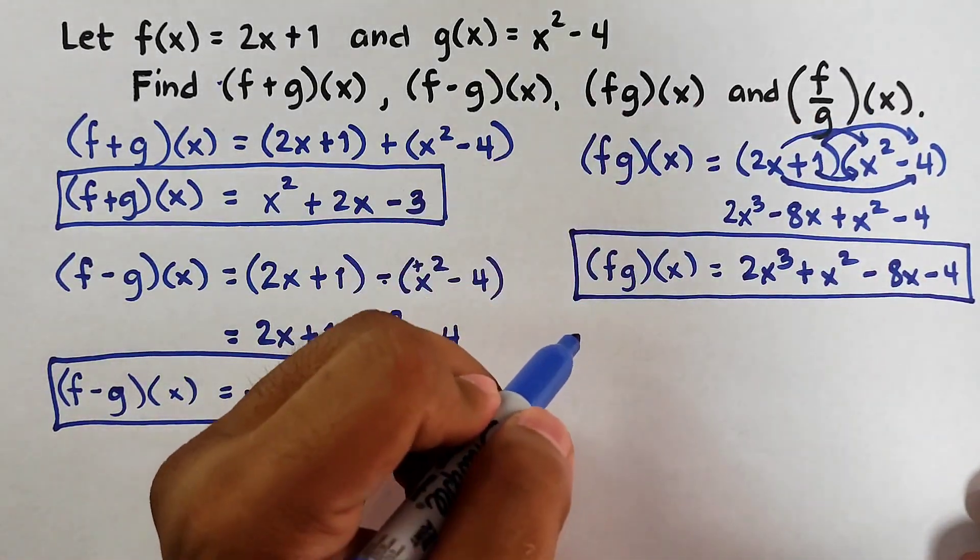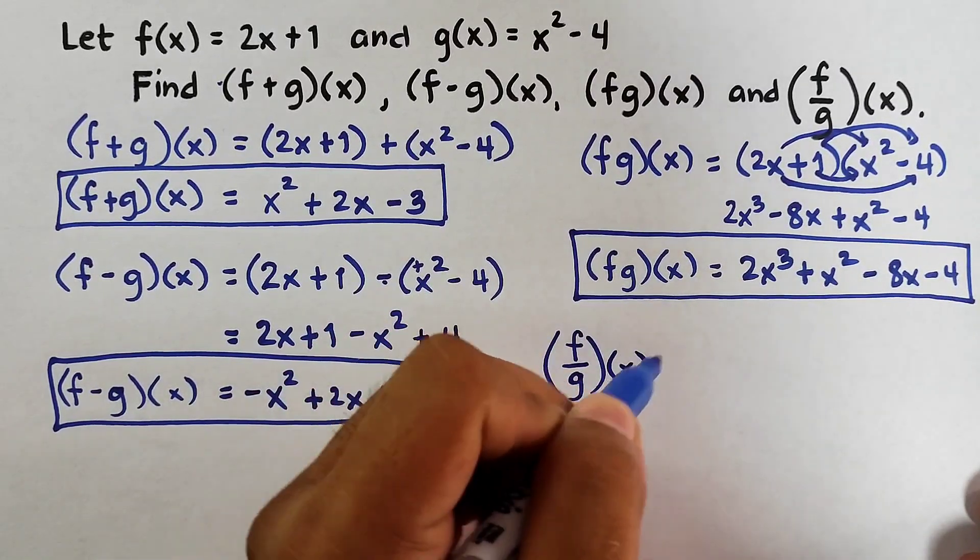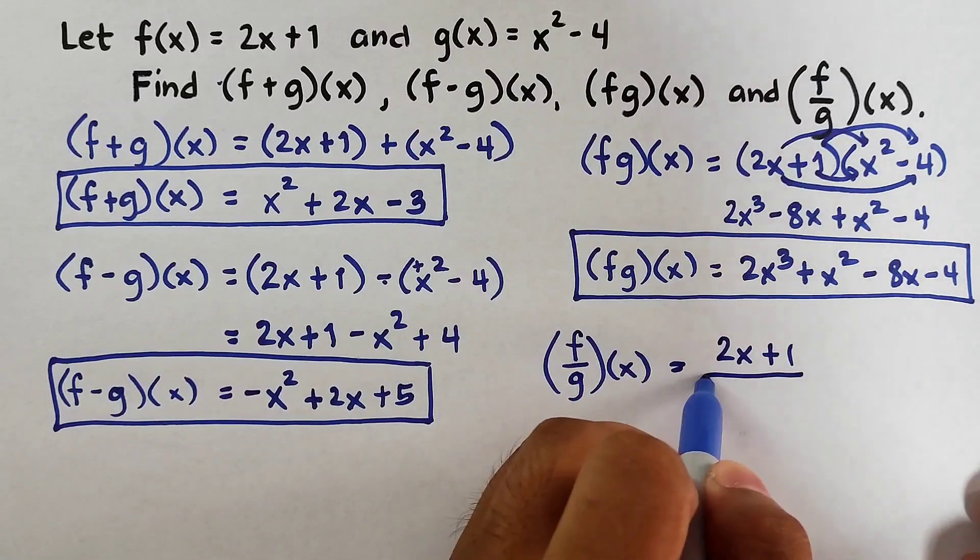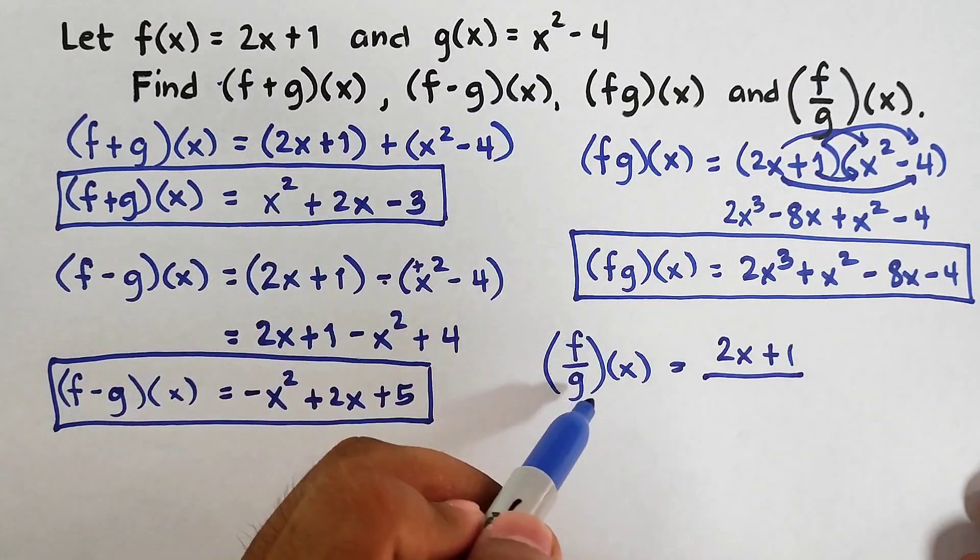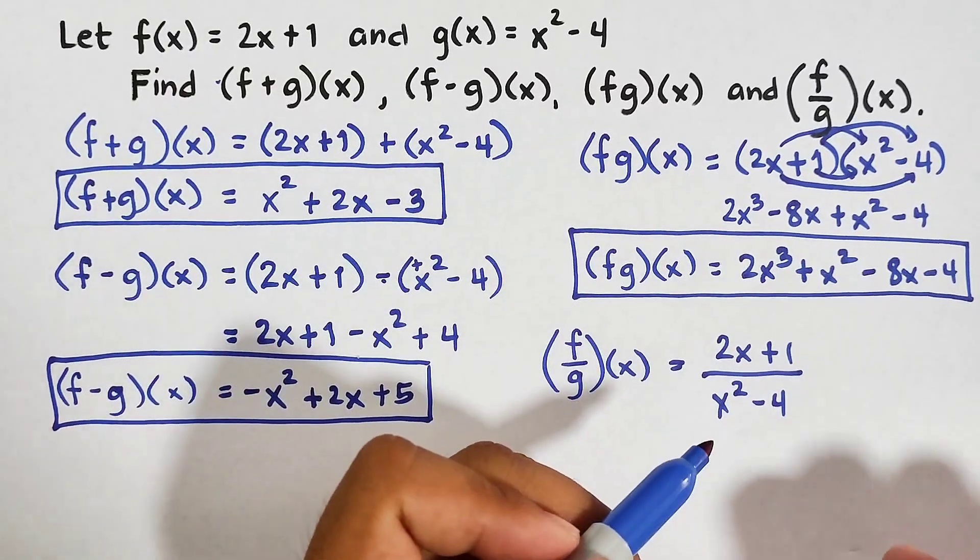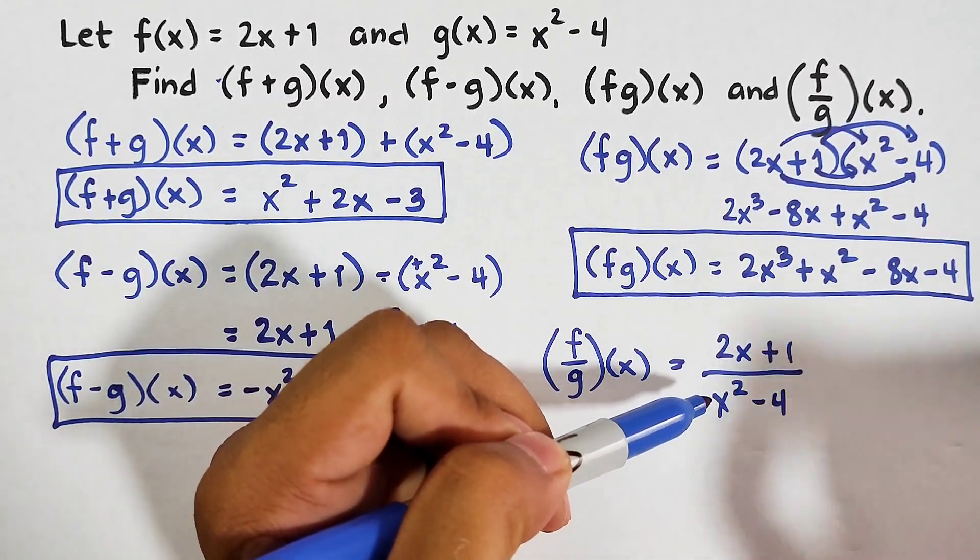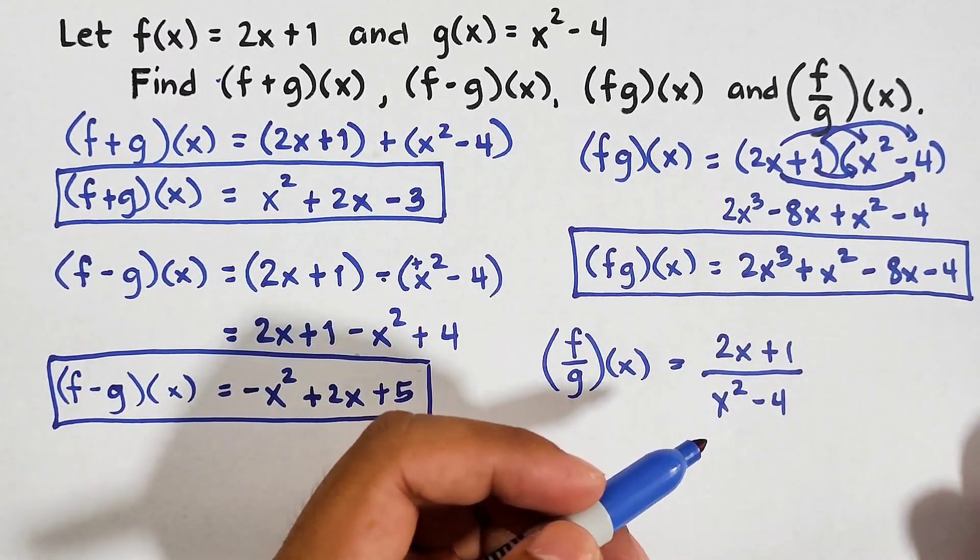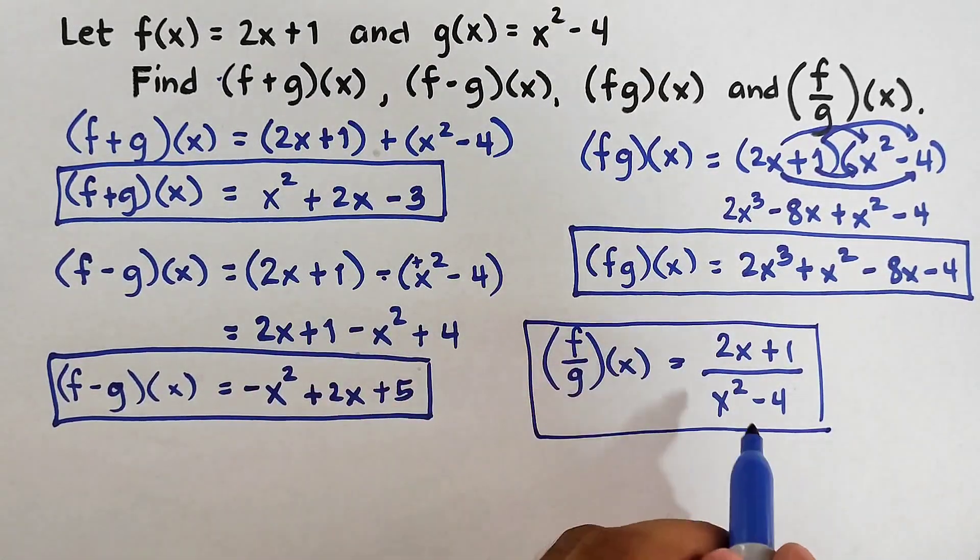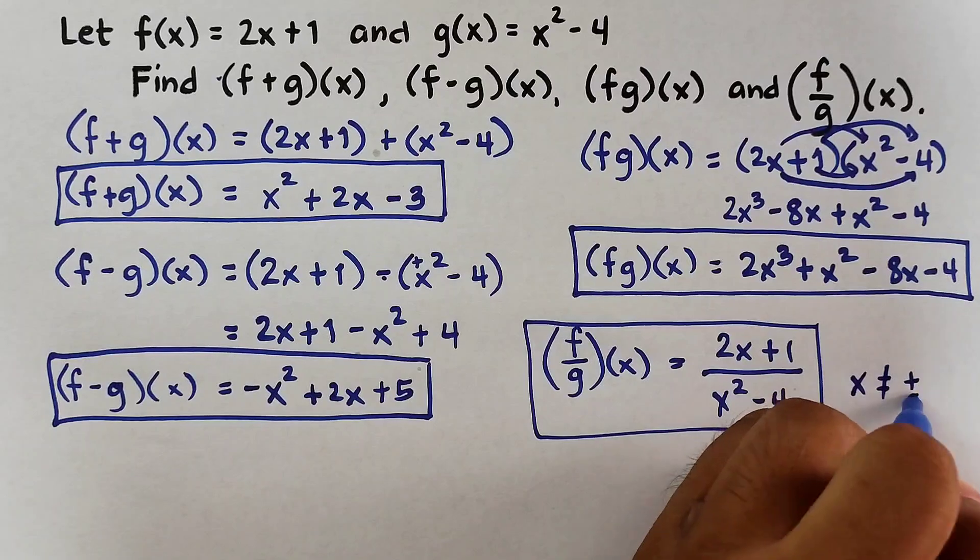Let's have the last one. We have a division. This is f/g of x. As you can see, the numerator is f. So we will start with (2x + 1) over your denominator g, which is x² - 4. Now in this case, we need to be sensitive if we can factor the numerator or we can factor the denominator and then eventually if we can cancel. But in this case, this one is the final answer. We can't factor anything here. But of course, we have a restriction. Since x² - 4 is here, our denominator should not be undefined. So the restriction is that x is not equal to positive or negative 2.